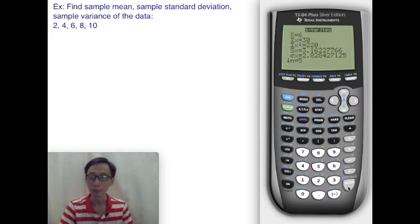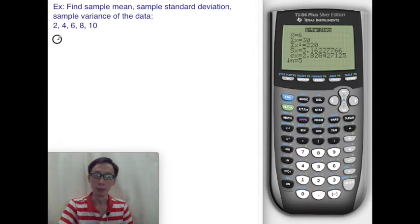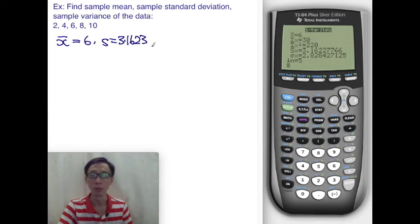Here we enter Enter and out comes the statistics. We just copy from the screen and say that the sample mean has a value of 6. The sample standard deviation has a value of Sx here, 3.1623, perhaps to 4 decimal places. And what we want is S squared.